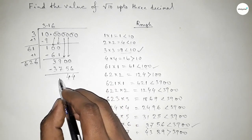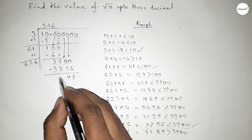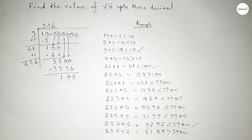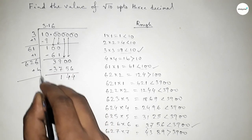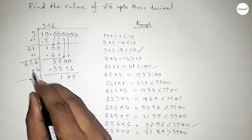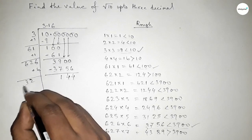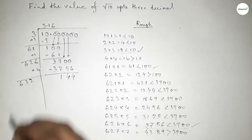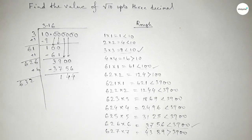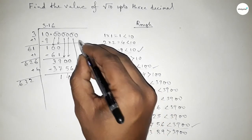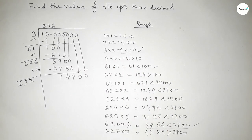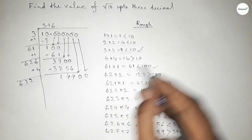Taking 6 here and putting 3756. Now subtracting: this gives 144. Adding the last digit 6: so 6 plus 6 equals 12, giving us 632. Bringing down the last pair of zeros, so this is 14400.